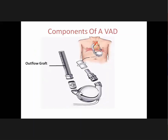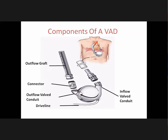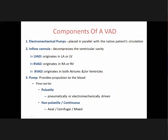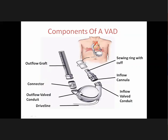Components of a VAD include: outflow graft, connector, outflow valve conduit, driveline, inflow valve conduit, inflow cannula, and sewing ring with cuff. Blood from the heart flows through the sewing ring with cuff into the inflow cannula, continues forward through the conduit, and is driven out through the outflow valve conduit via a connector to the outflow graft, which is connected to the ascending or descending aorta.